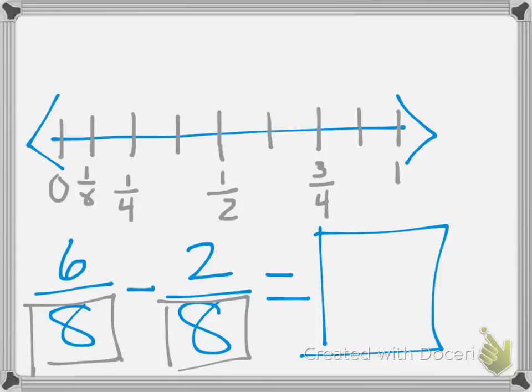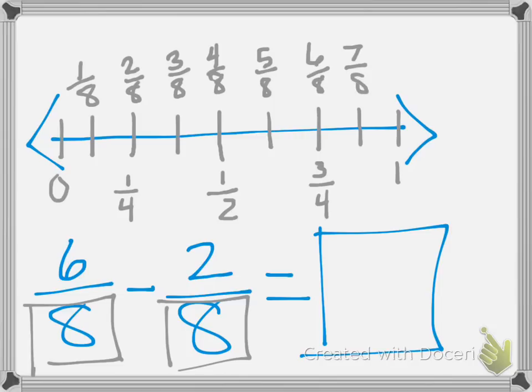So this is going to be one-eighth. This then becomes two-eighths, three-eighths, four-eighths, which we already talked about is equivalent to one-half. Five-eighths, six-eighths, seven-eighths, and eight-eighths, which we all know is one whole.